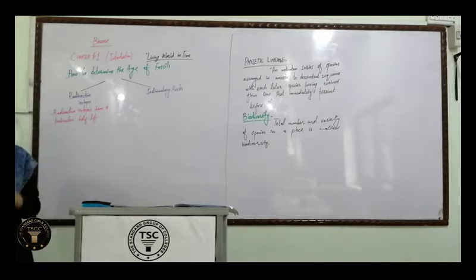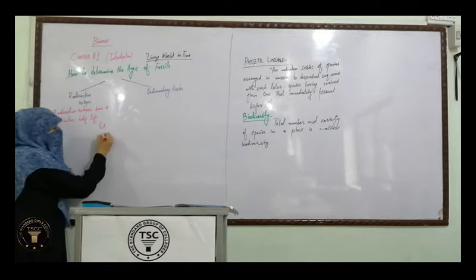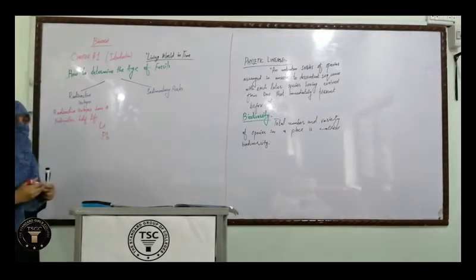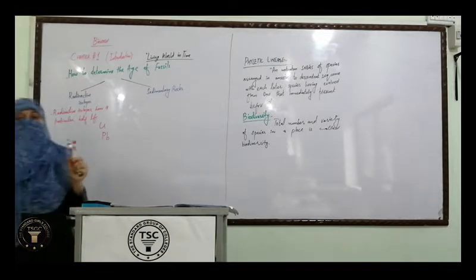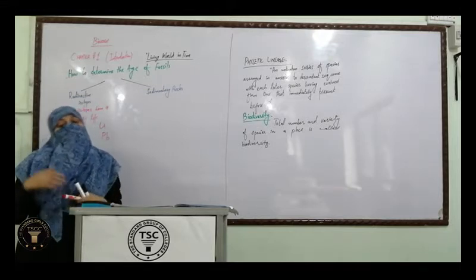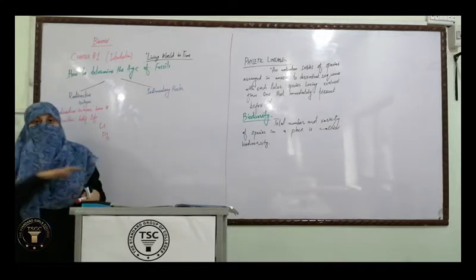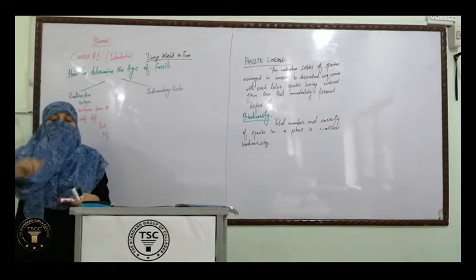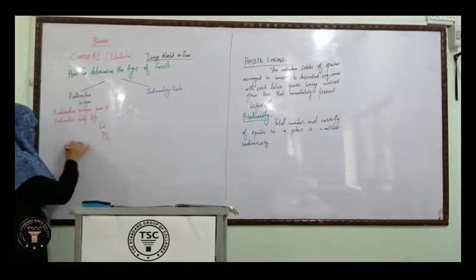There are certain radioactive isotopes which we know. For example, you can consider uranium and lead. These are radioactive isotopes which are found in nature and in fossils. We need to know which fossil is younger and which fossil is older. Inside a rock, there are radioactive isotopes.